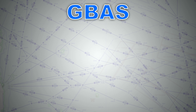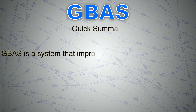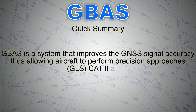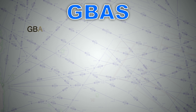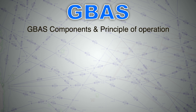To repeat what we've said so far in simpler terms: GBAS is a system which improves the GNSS signal accuracy, thus allowing aircraft to perform precision approaches called GLS, or GBAS Landing System. Now let's have a look at GBAS components and principle of operation.